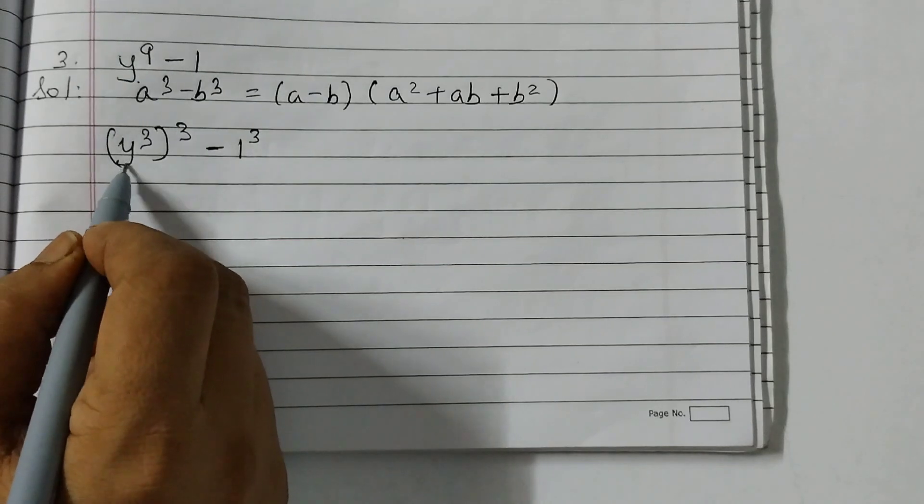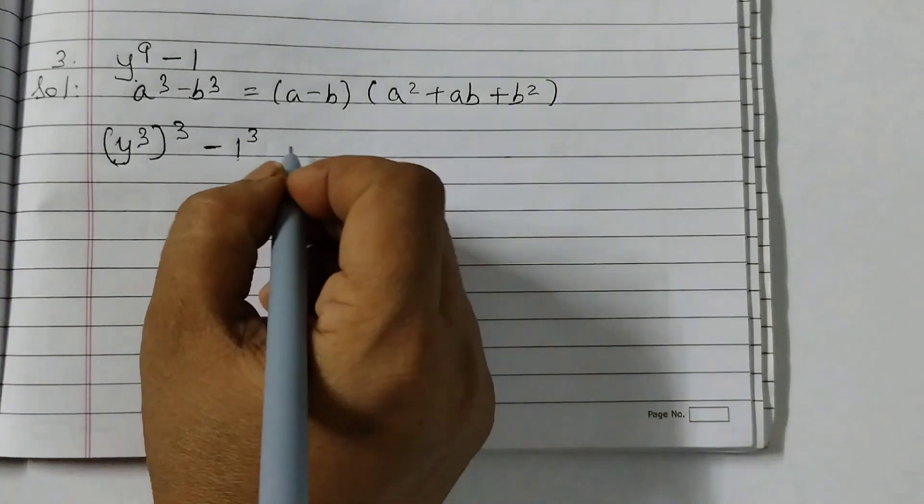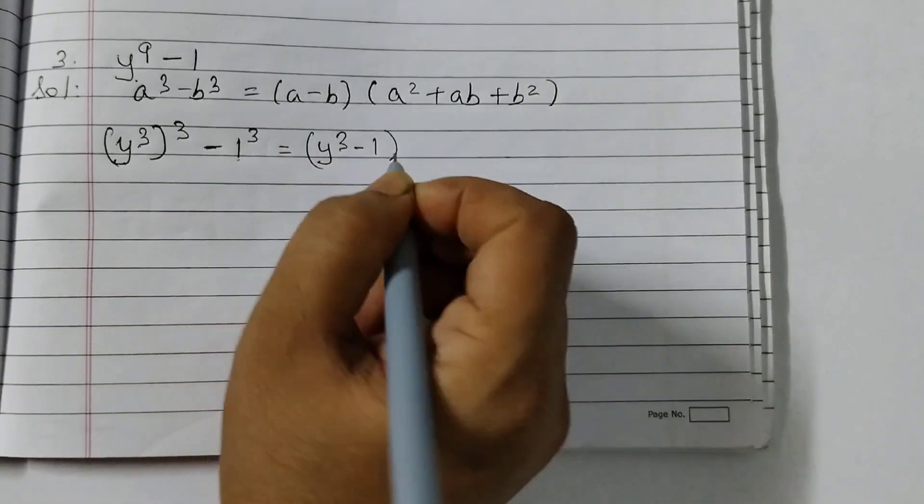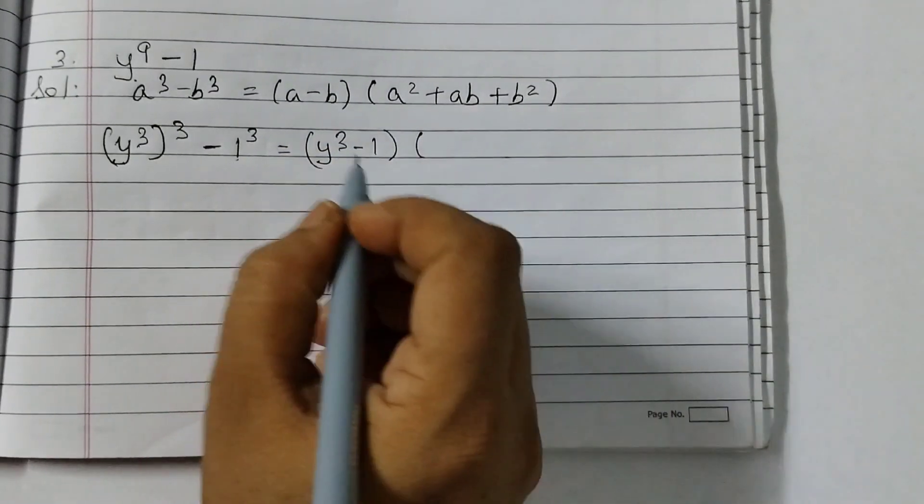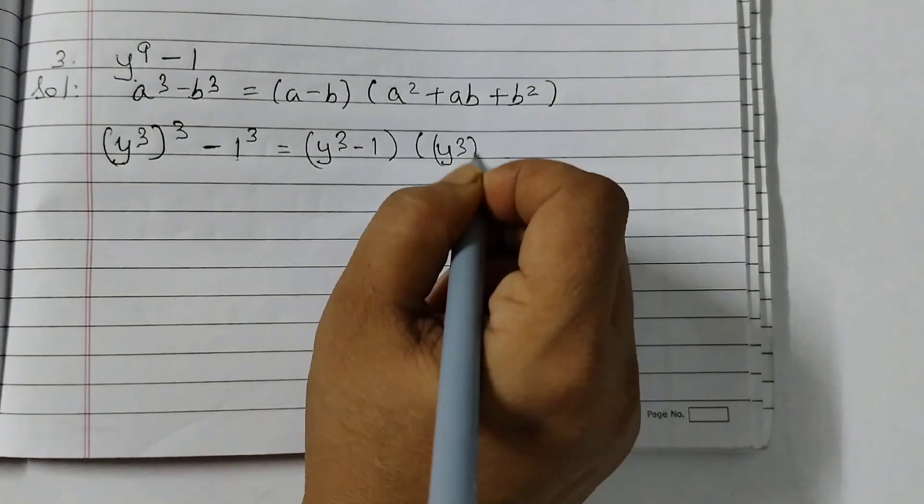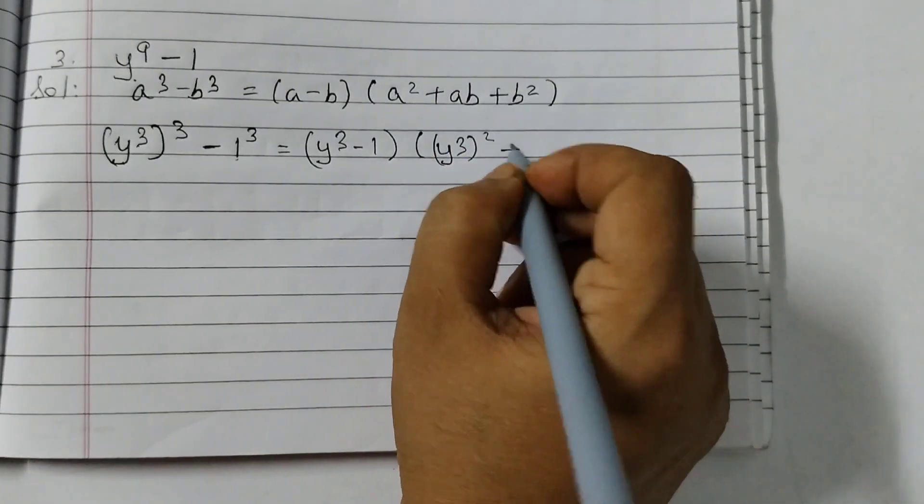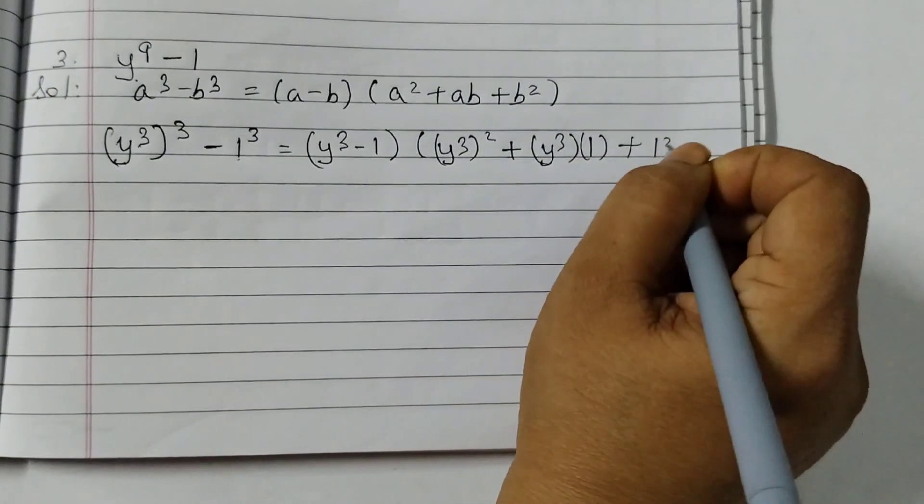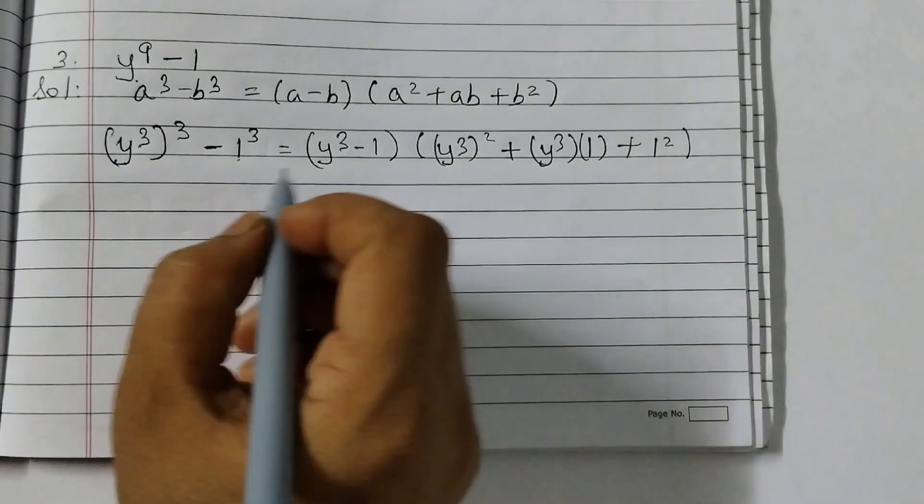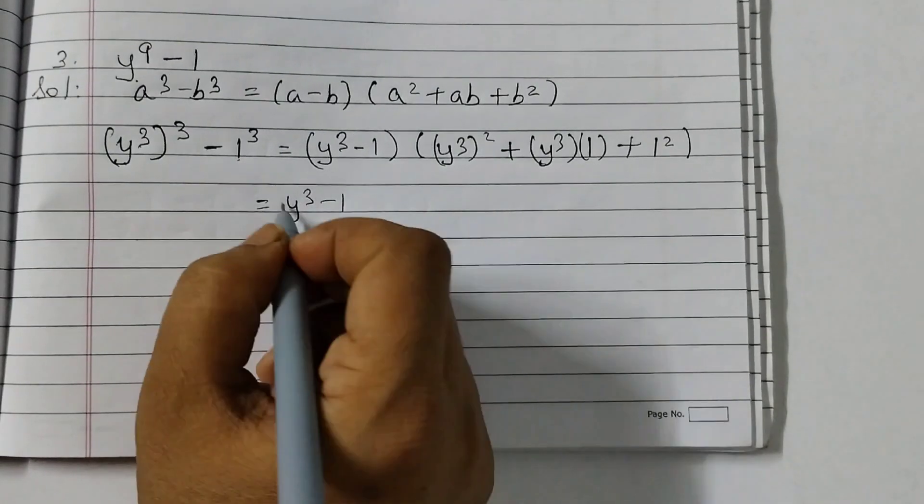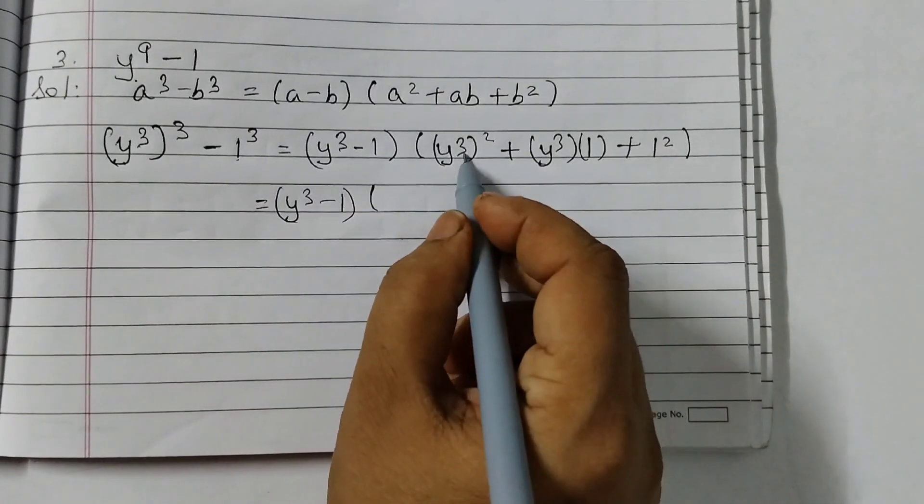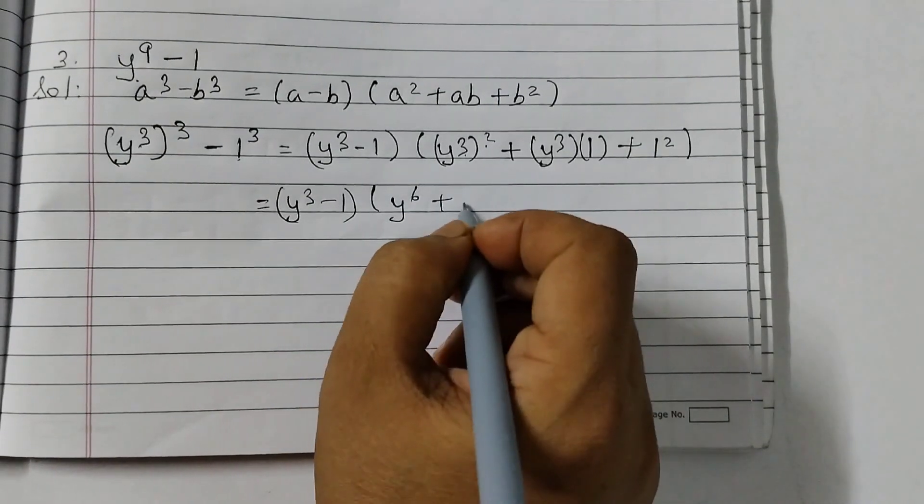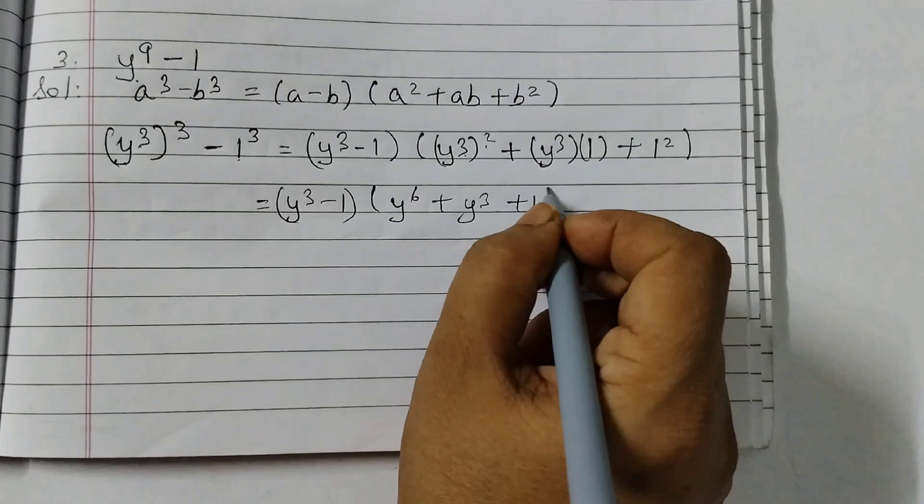So here Y cubed is A and 1 is B. Apply the formula. Y cubed minus 1, A minus B, and then A squared. So Y cubed squared plus Y cubed into 1 plus 1 squared. Simplify: Y cubed minus 1, and 3 into 2 is 6, so Y to the power 6 plus Y cubed multiplied by 1 plus 1.